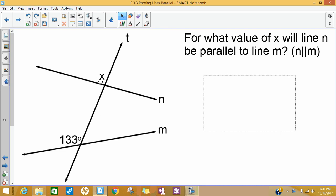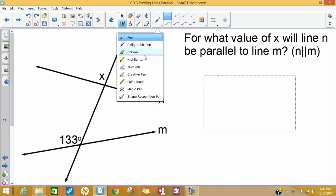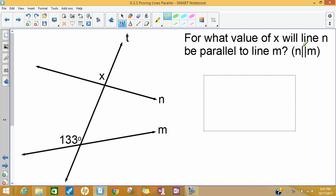Here I have line n and line m being intersected by transversal t. I want to know if this angle is 133 degrees and this angle is x, what value of x will make line n be parallel to line m? I can say line n parallel to line m just by writing this n with the parallel symbol m.